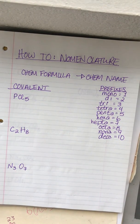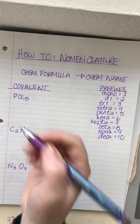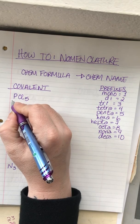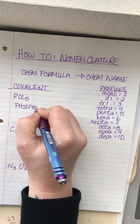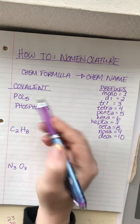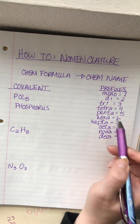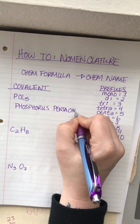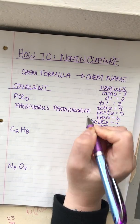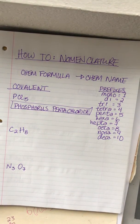Now we'll talk about covalent nomenclature going from the chemical formula to the chemical name. For PCl₅: there's one phosphorus, so we don't write 'mono' — we just write phosphorus. There's a 5 on the chlorine, and five is 'penta,' so we write pentachloride. The chemical name is phosphorus pentachloride.